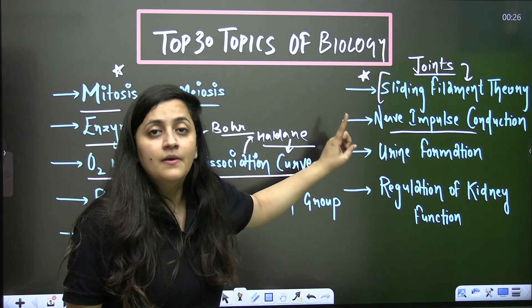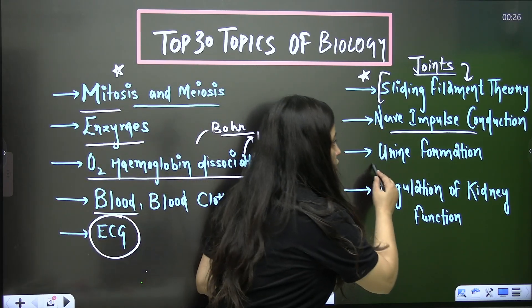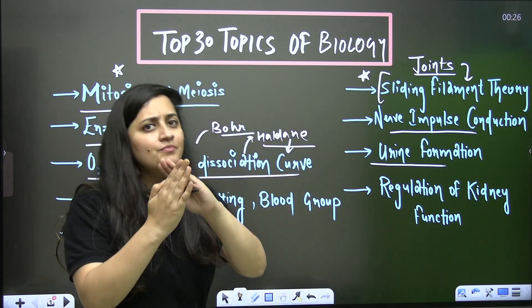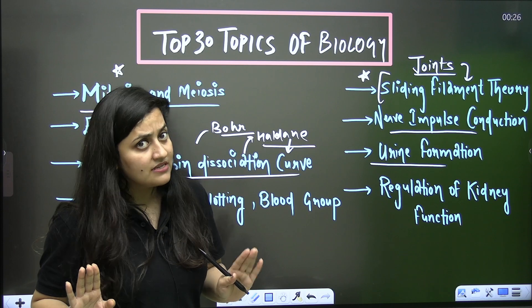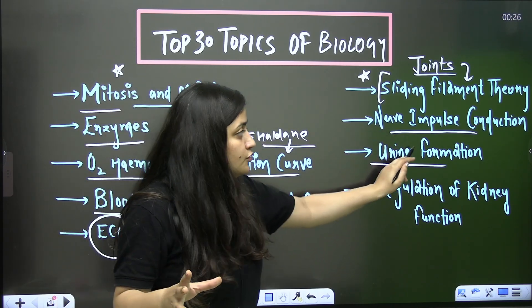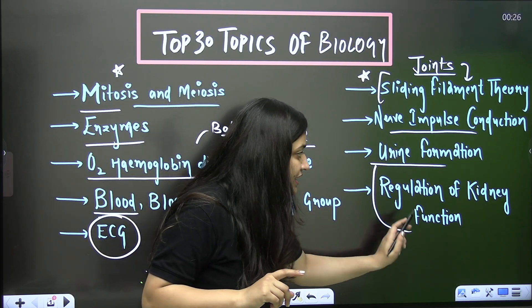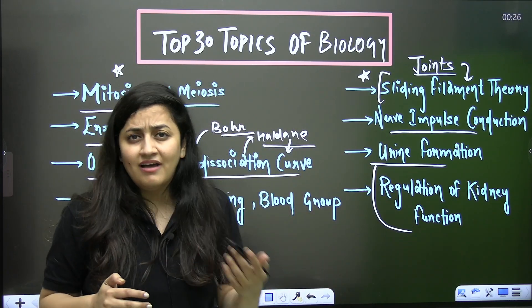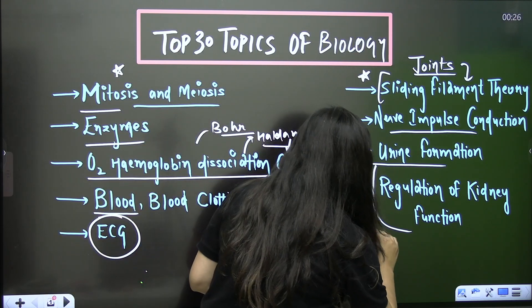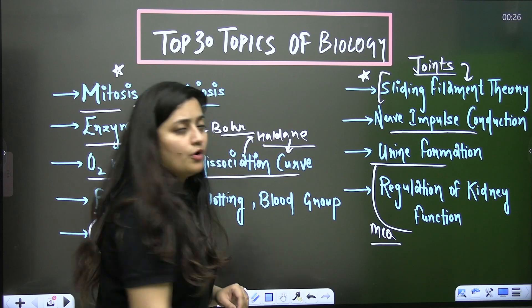Now the urine formation. And if you understand the urine formation, parallelly you can complete counter current mechanism as well. But individually if you don't understand counter current mechanism, do not miss the urine formation. Next topic is the regulation of kidney function where you talk about the RAS, you talk about the other hormones as well. Please do not miss this part. This is very very very important topic from the excretory product and its elimination.